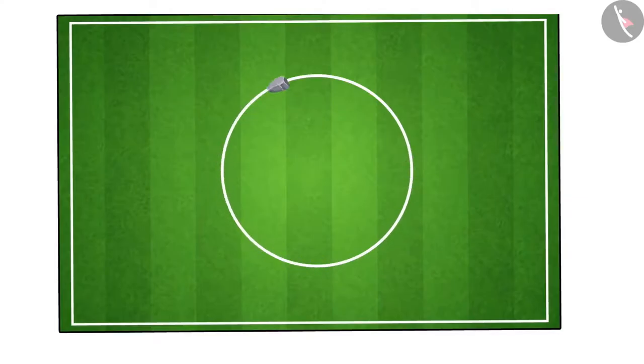If there is no centripetal force, the stone will fly in a straight line, forming a tangent to the circular path of the stone.